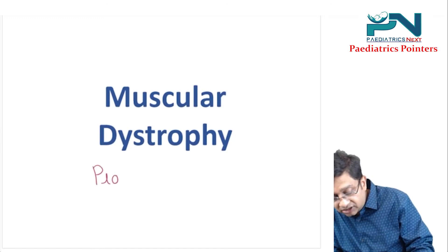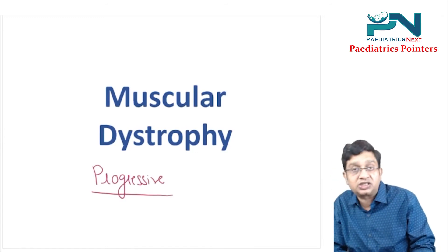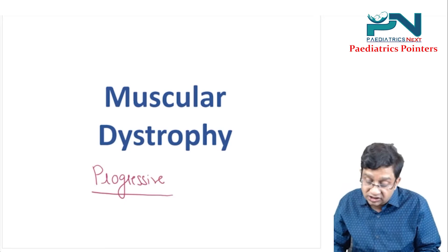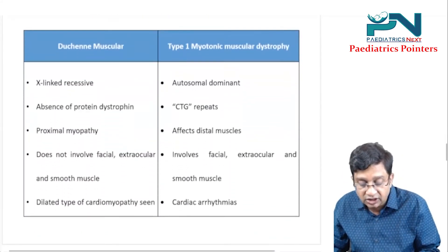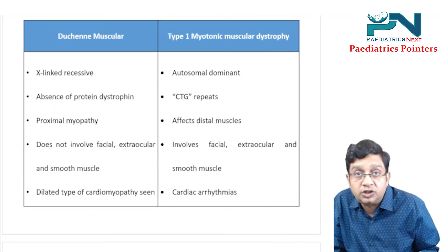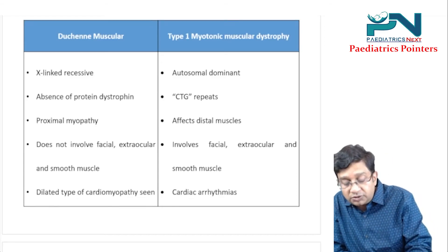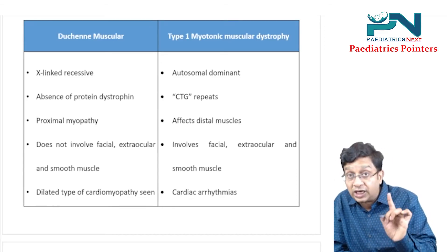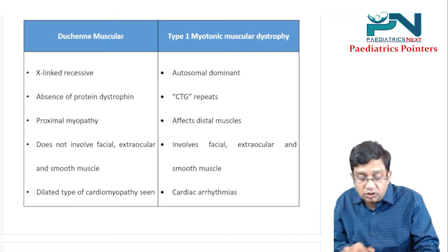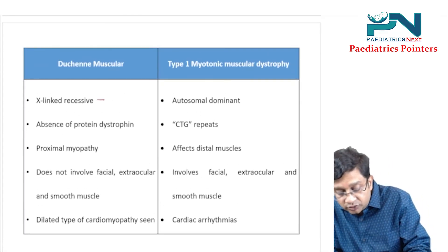In muscular dystrophy, the key thing to remember is that it is progressive — unlike cerebral palsy which is non-progressive. Broadly, remember two types: Duchenne muscular dystrophy and myotonic muscular dystrophy type 1. Duchenne is X-linked recessive, so it is seen in males.